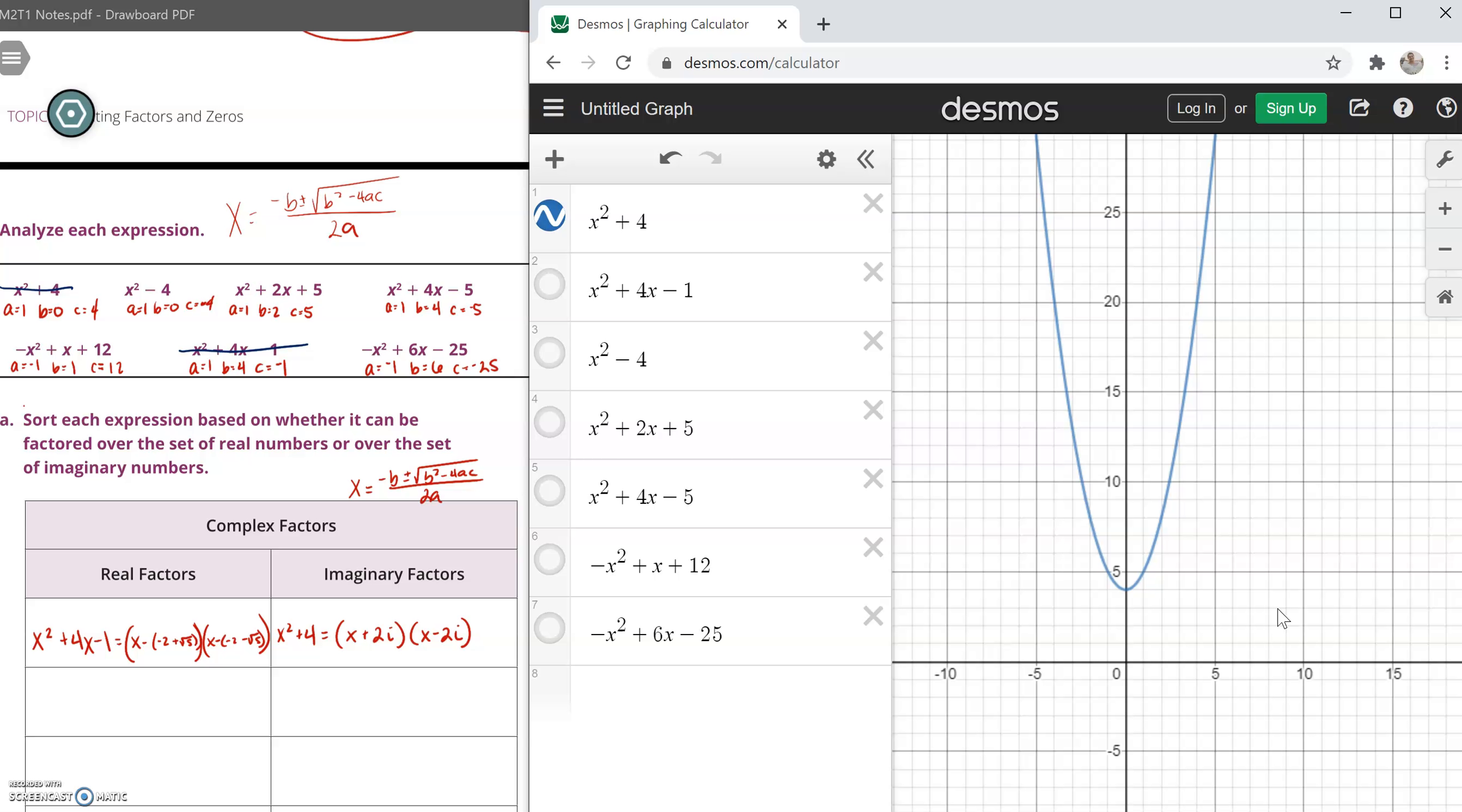But the big thing that we see - remember when we factor, we said that we are finding the zeros. And the zeros are the solutions. And the zeros and the solutions also represent what values? The x values. The x-intercepts.